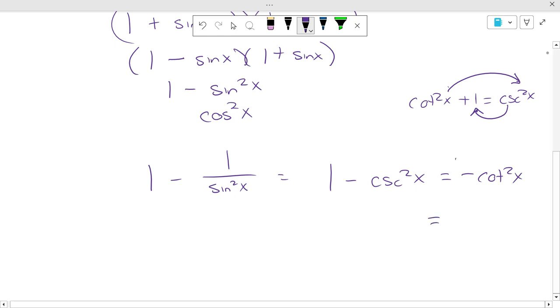Now, if we were told to put it in terms of sines and cosines, it would be negative cosine squared of x over sine squared of x.